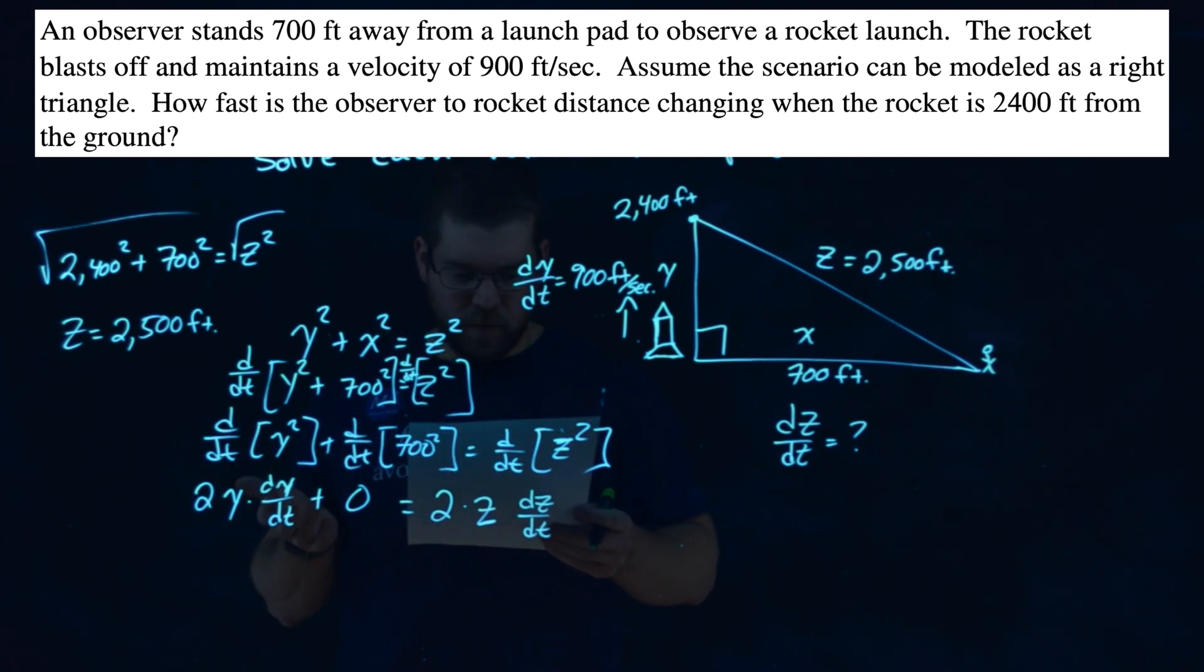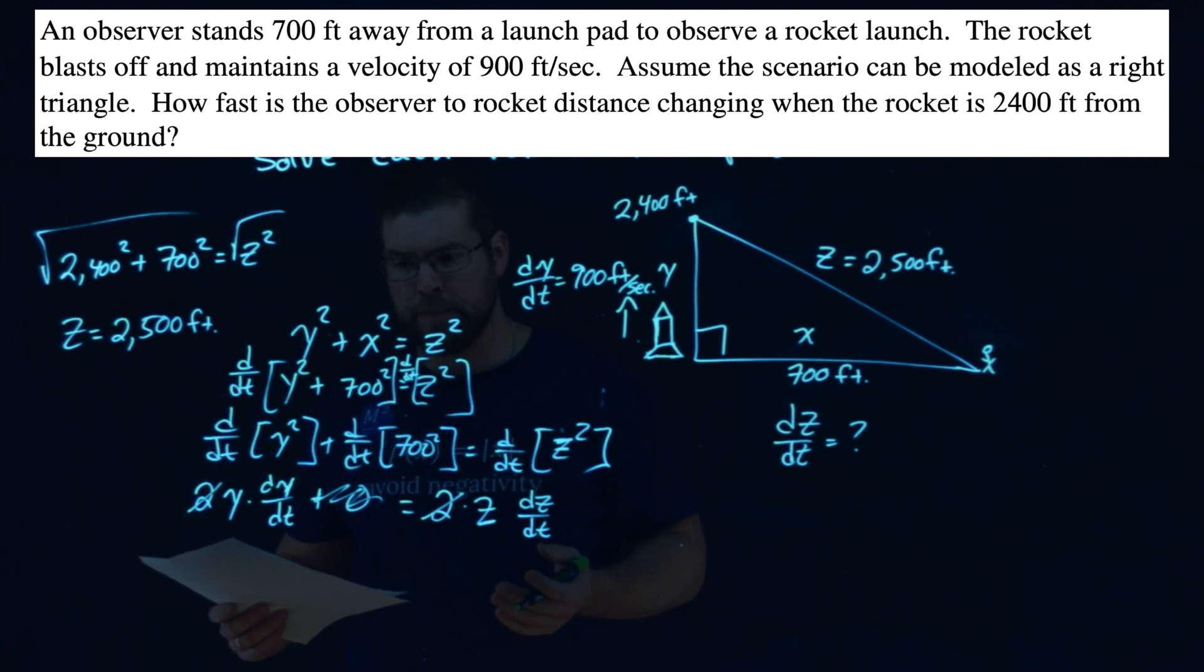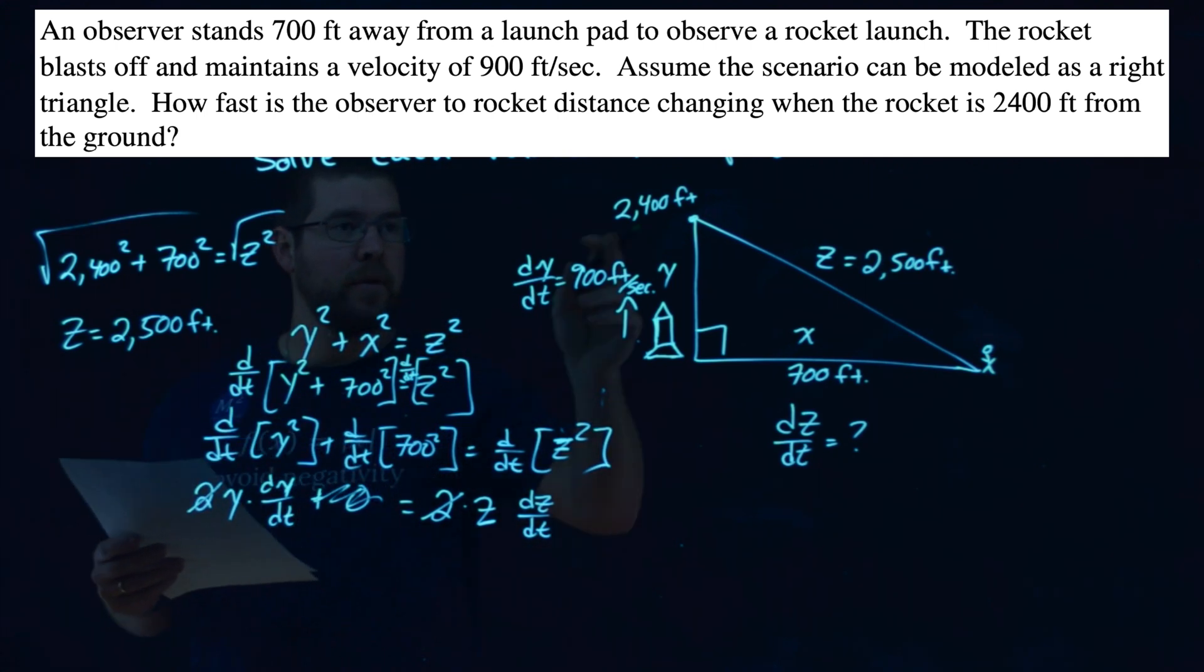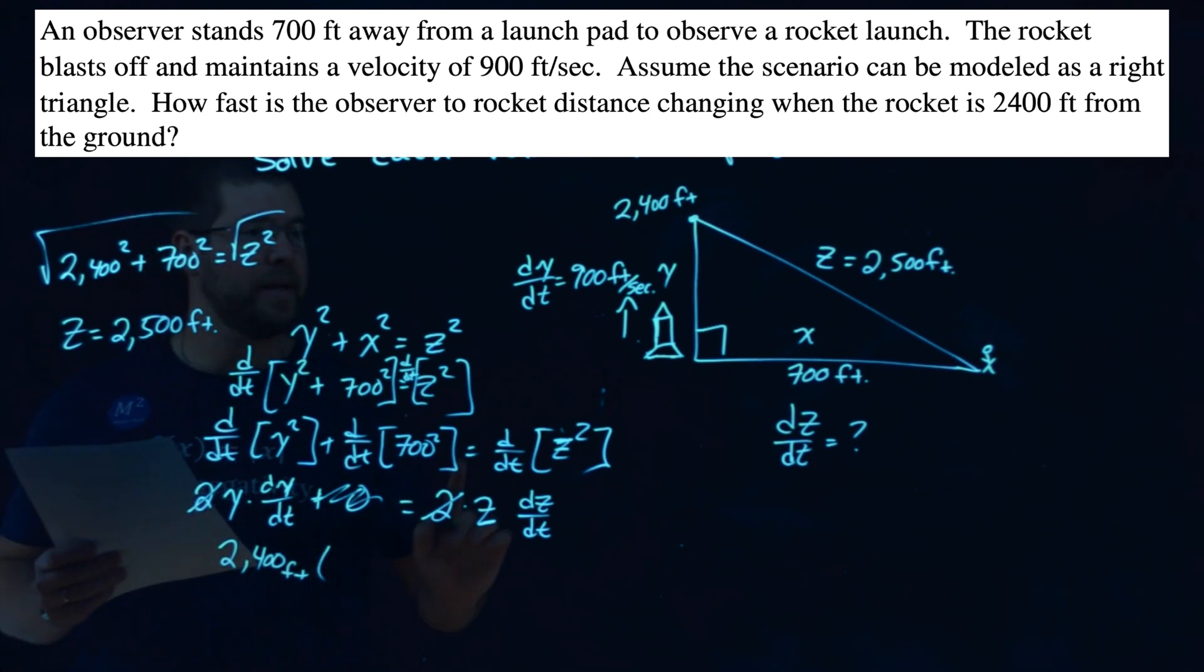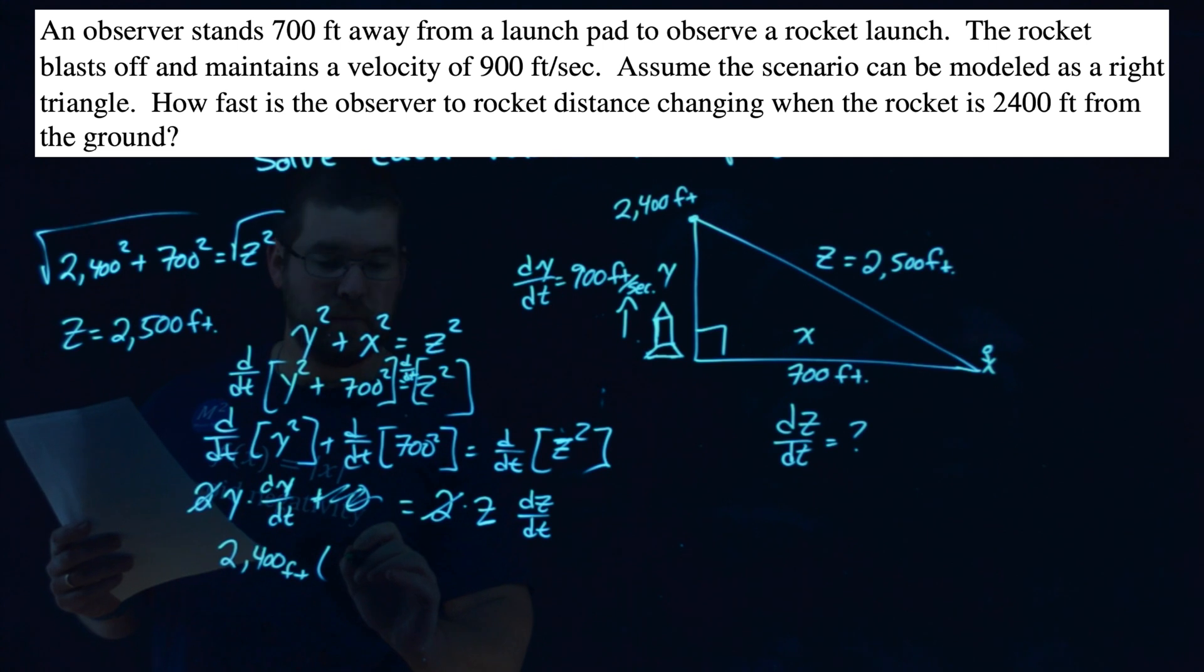Well, let's plug in what we know. We don't really need the zero. We can erase that. The two cancels out right there. Don't need that either. Divide both sides by two, it's gone. Our Y value at the moment is 2,400 feet. So we can put that in, 2,400 feet, times the rate at which the rocket is constantly moving up is 900 feet per second. 900 feet per second.